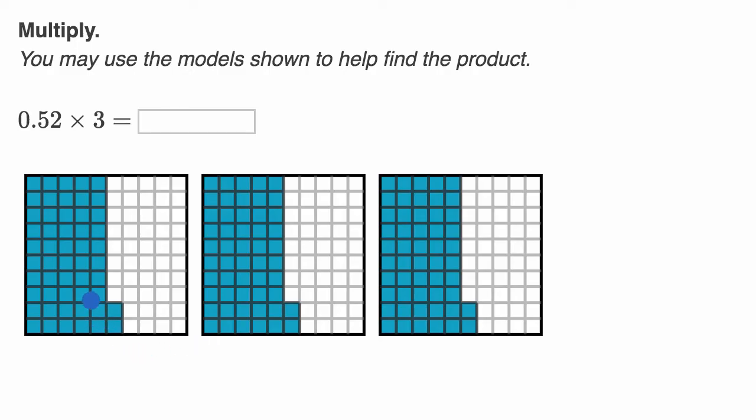Well, you could view this as 52 times three, and that will give you the number of hundredths we have. So let's think about this. If we were to just say 52 times three, well this is going to be two times three equals six, and then five tens times three is 15 tens, which is the same thing. We could either just write it as 15 tens, or that's one hundred and five tens.